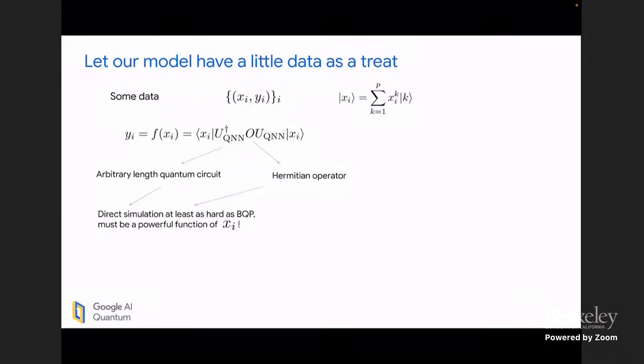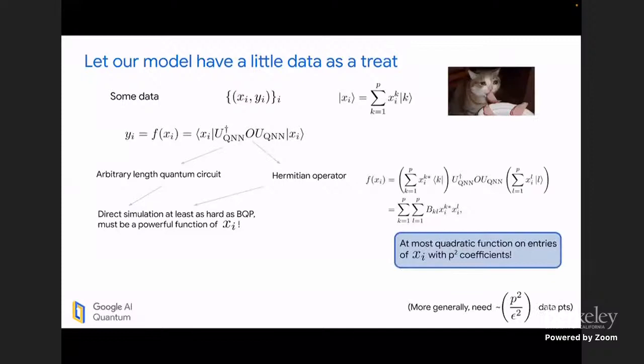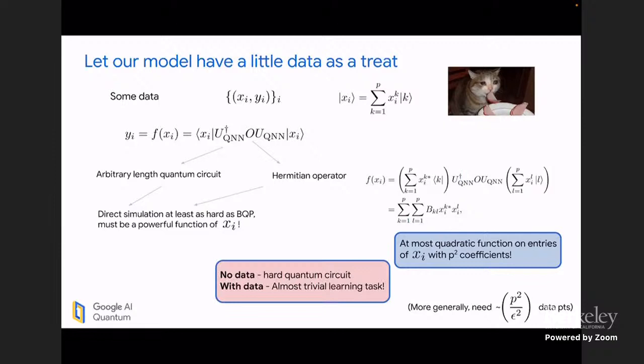And as long as I give myself ancilla, this is, in fact, I can make an arbitrary computation in here. And so direct simulation must be at least as hard as BQP. And because it's infinite length, it's probably harder. And I want to look at what my outputs actually look like. So I take my N inputs. I take this operator O and I simply expand it out. I do a little math. And I have this matrix BKL, which I've told you is basically as hard to compute as doing anything in quantum computation. But this is, at most, a quadratic function of XI with P squared coefficients. And basically what's happened here is that with no data, this is a hard quantum circuit. And with a quadratic amount of data, this is almost a trivial learning task.